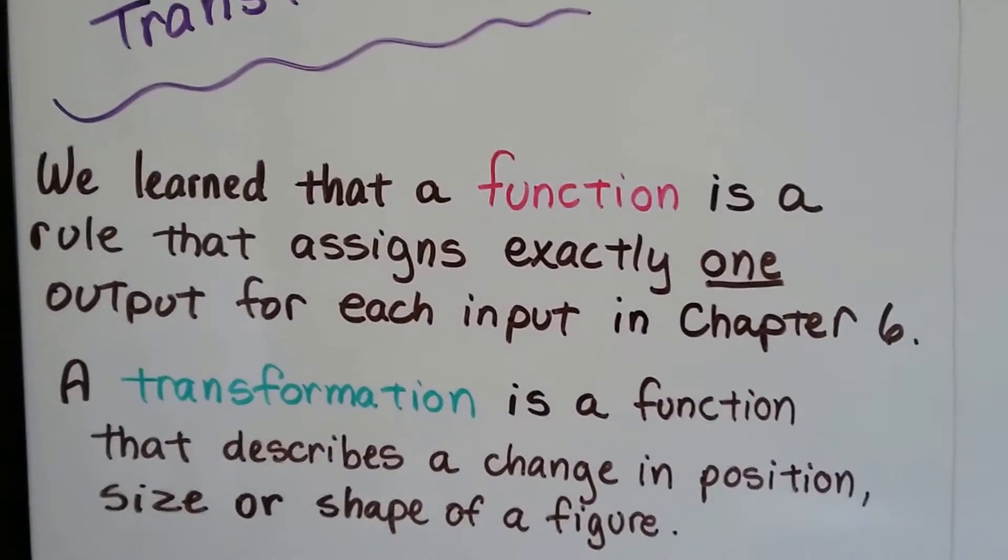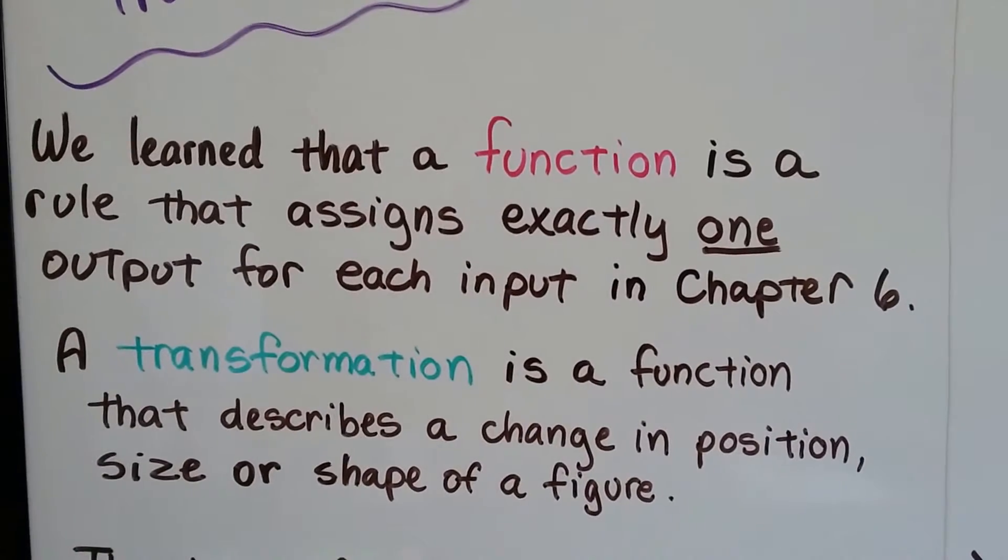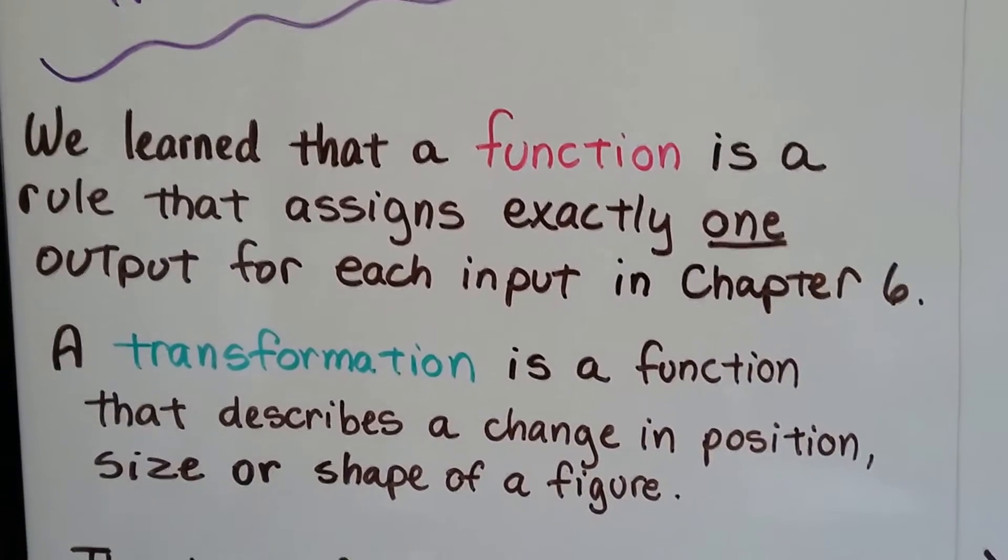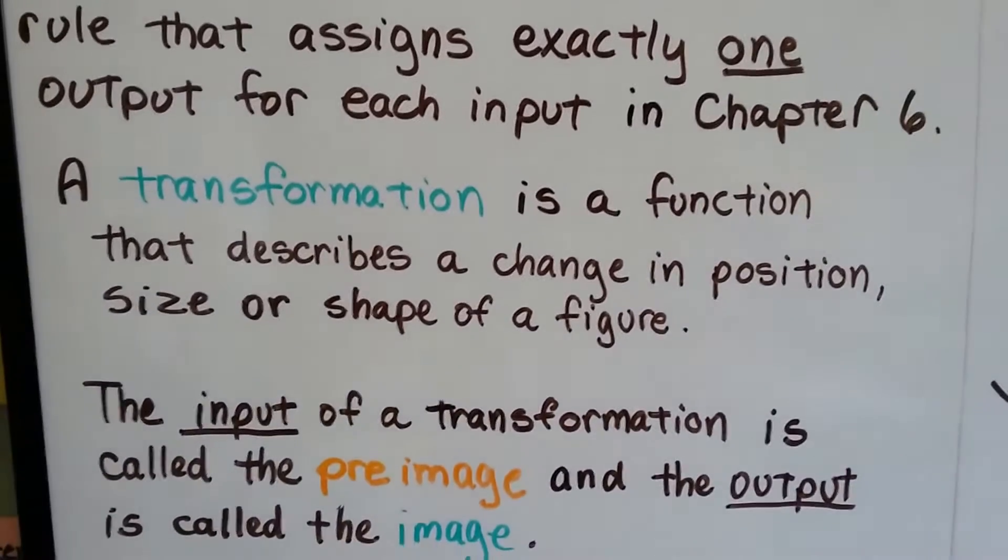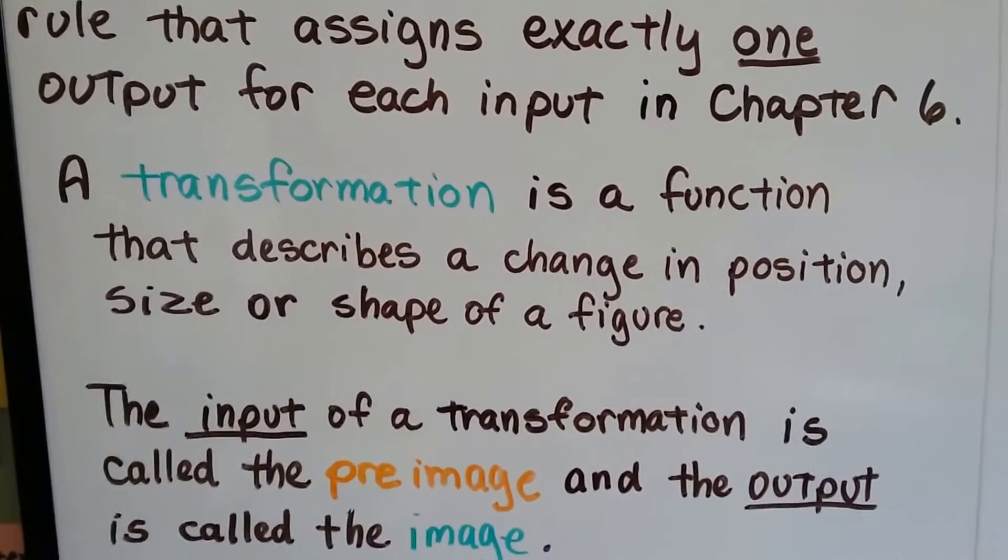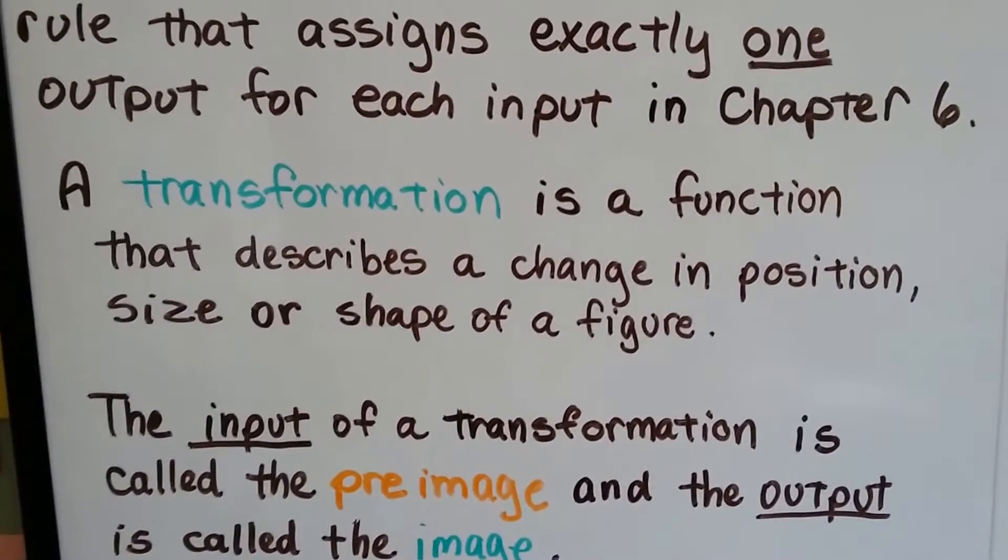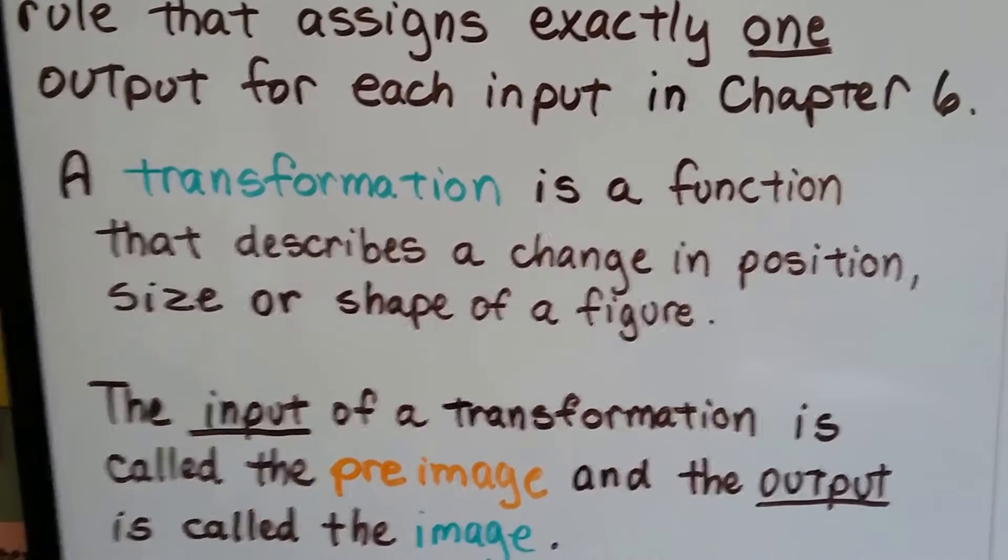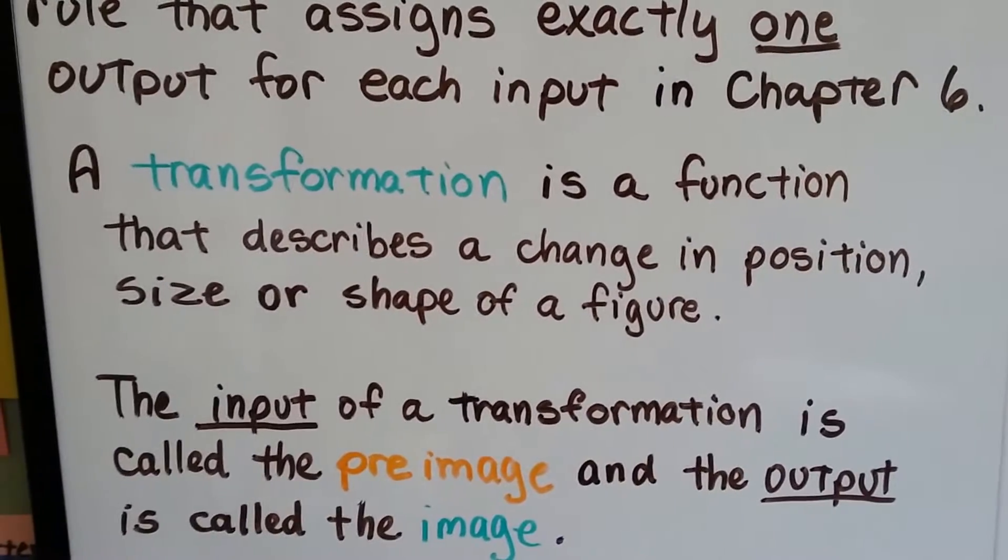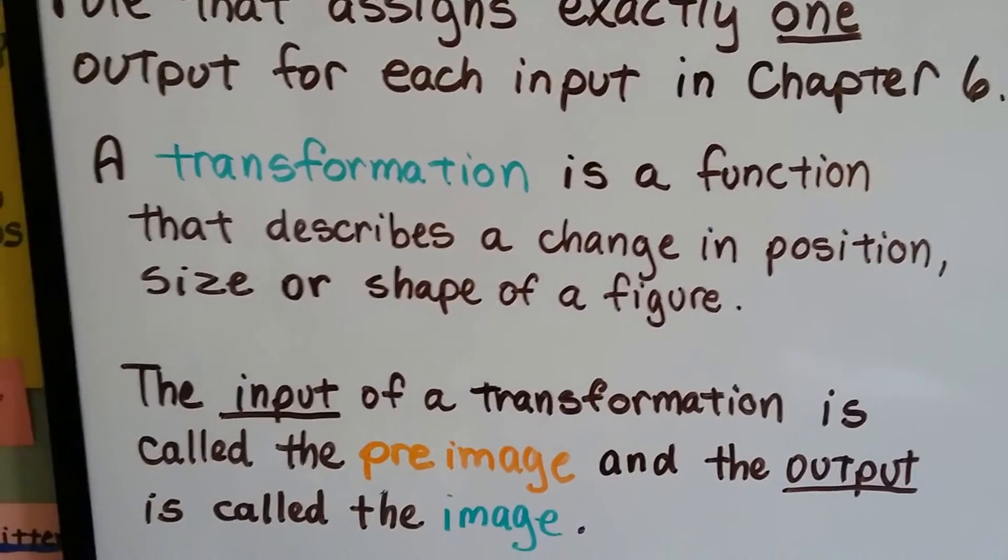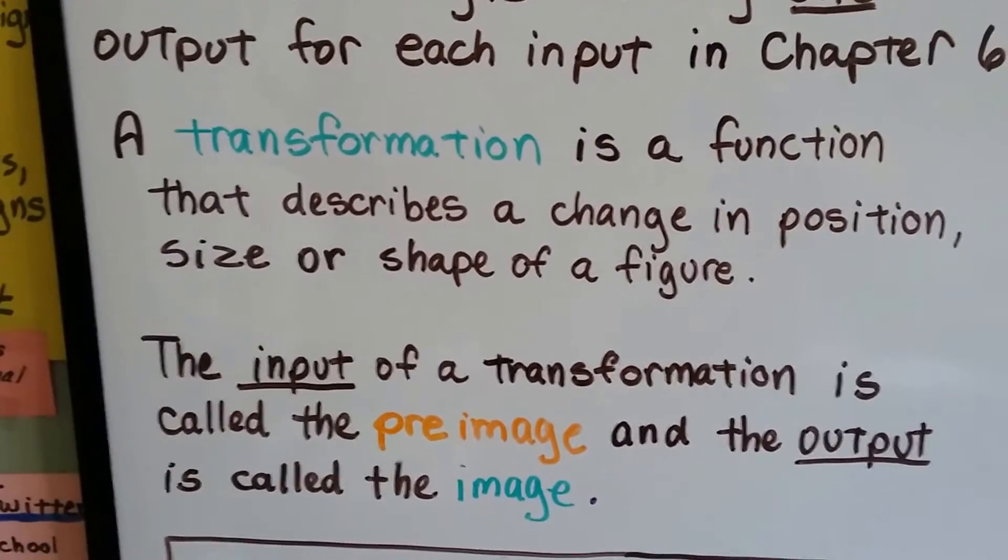We learned that a function is a rule that assigns exactly one output for each input in chapter 6. A transformation is a function that describes a change in position, size, or shape of a figure. Think transformers, like the toys, right? They change size and shape.